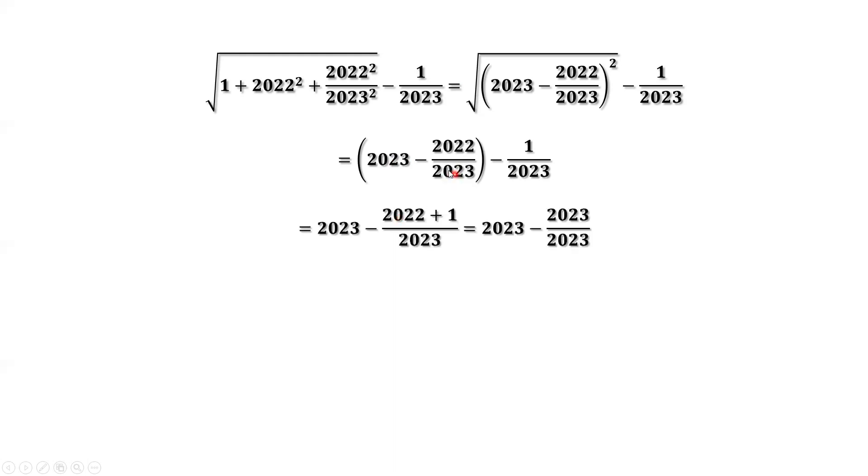Combining the last two terms, we have 23 over 23, which is 1. 2023 minus 1 is 2022. 2022 is the final answer.